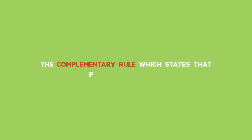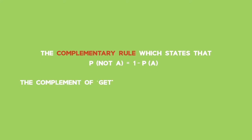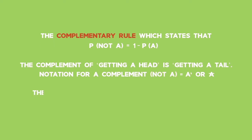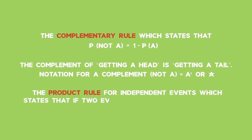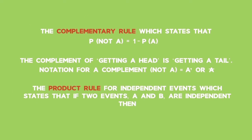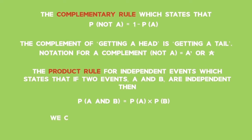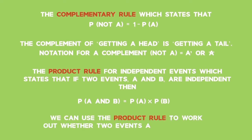Another identity is the complementary rule, which states that the probability of not getting event A, or the complement of A, is equal to 1 minus the probability of getting event A. So the complement of getting a head is getting a tail. You will sometimes see A-dash or A-bar used to indicate not A, or the complement of A. Another identity is the product rule for independent events, which states that if two events A and B are independent, then the probability of A and B occurring is equal to the probability of A occurring times the probability of B occurring. We can use the product rule to work out whether two events are independent.